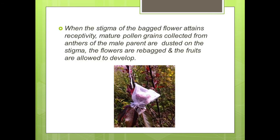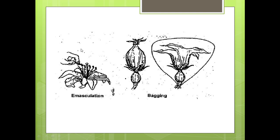When the stigma of bagged flowers attains receptivity, the mature pollen grains are collected from the anthers of the male parent and dusted on the stigma. The flowers are then re-bagged and the fruits are allowed to develop. Here you can see the summarized emasculation and bagging process.